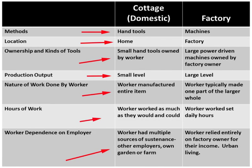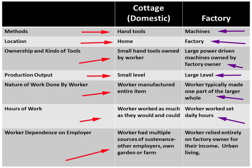When you compare that to the factory, they used machines and all work was done in the factory using large power-driven machines owned by the factory owner. They would mass-produce items. The worker typically made one part of the larger whole, worked set daily hours, and relied entirely on the factory owner for their income. Workers usually lived in the cities where they worked.